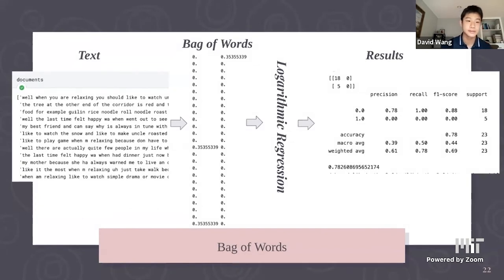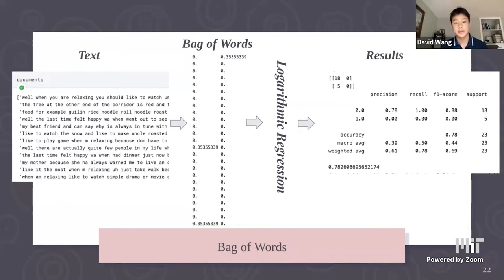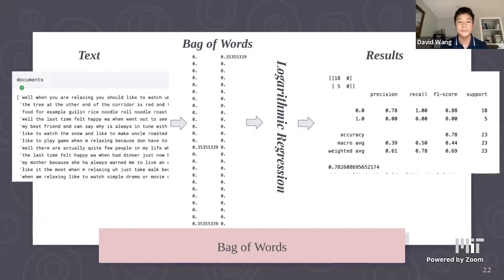Here's how we implemented it: we took all transcripts in our data frame, converted them into a bag of words — an array of importances or counts for each word — and fed that into a logistic regression model. Results: a confusion matrix of 18, 0, 5, 0 and an accuracy of around 78%.